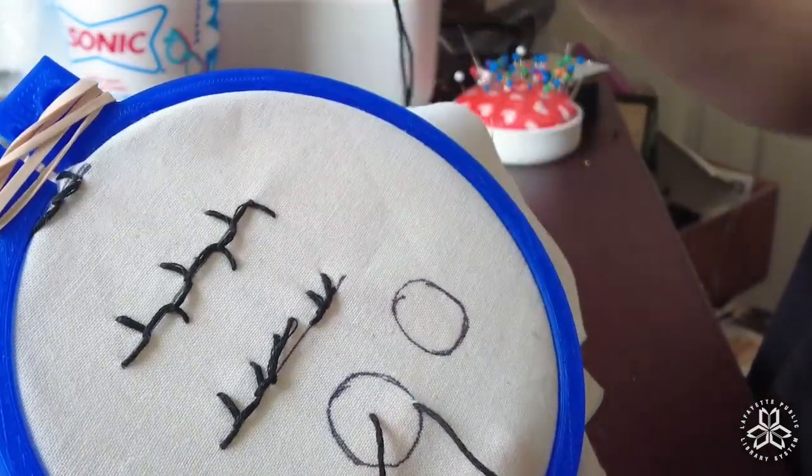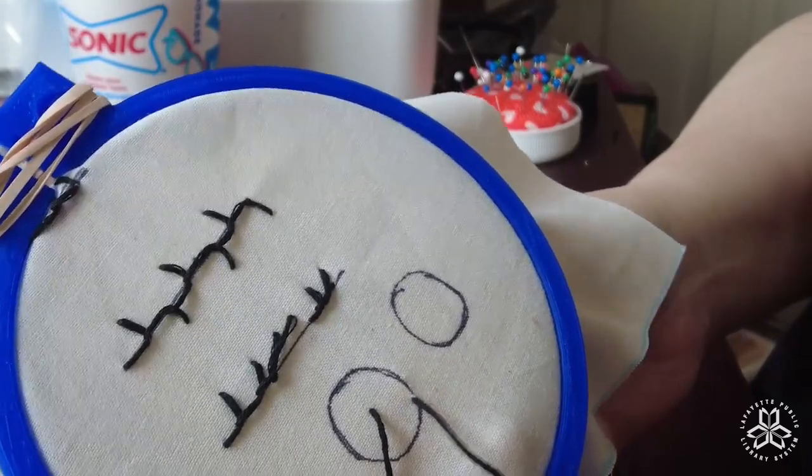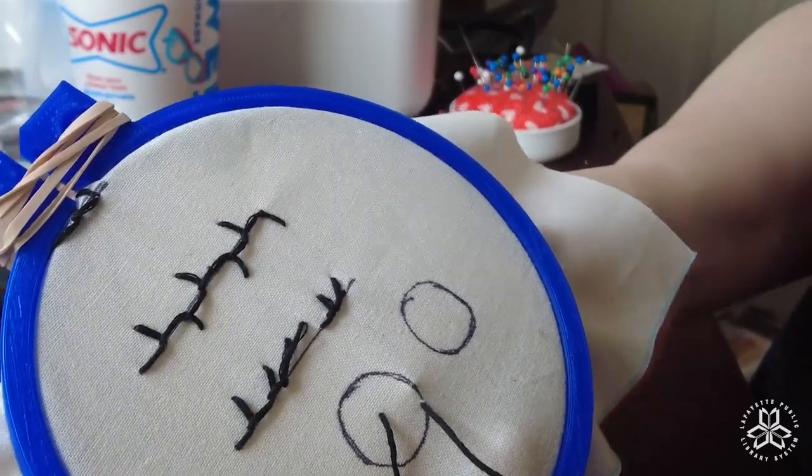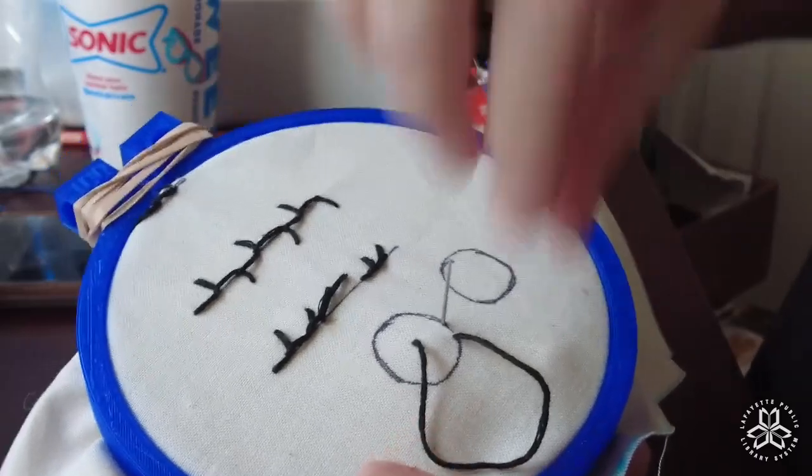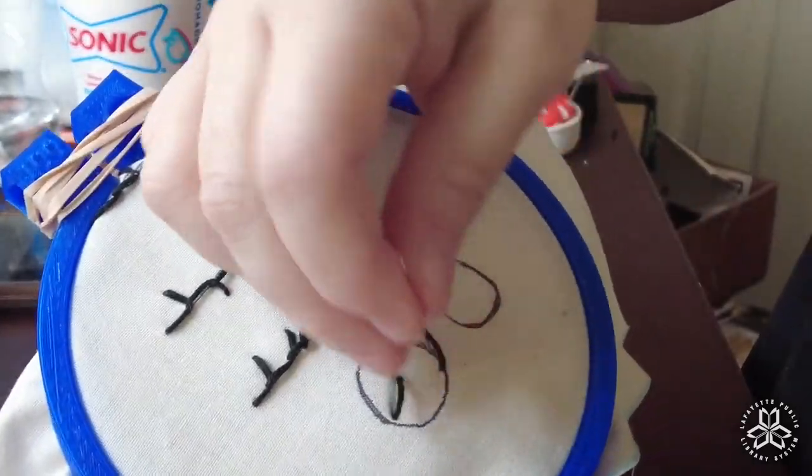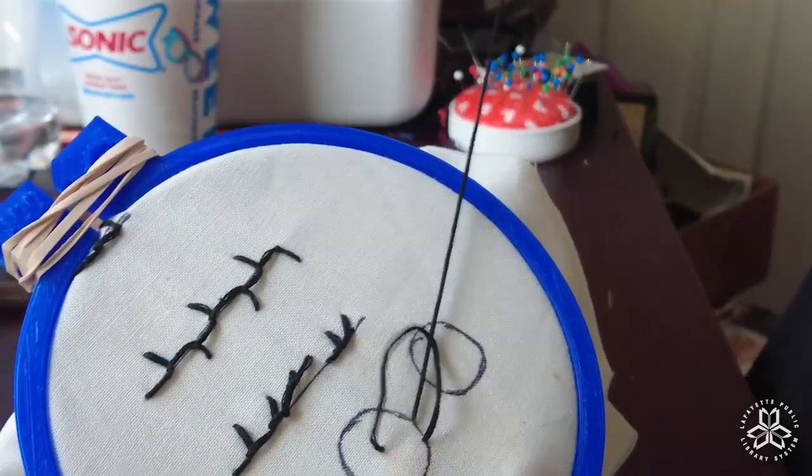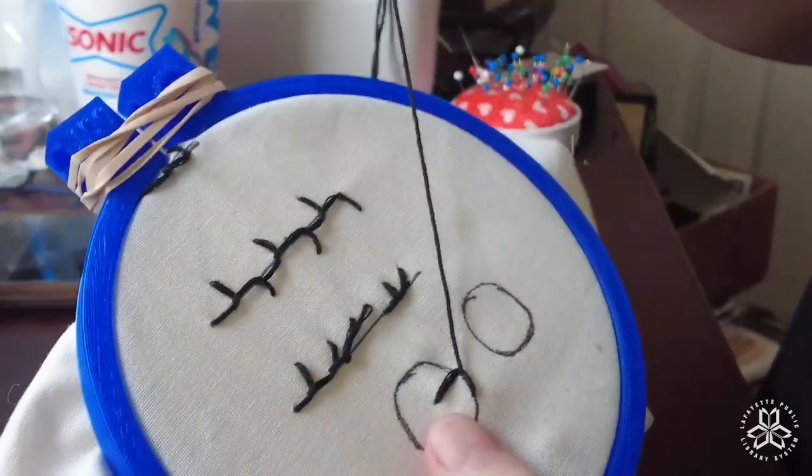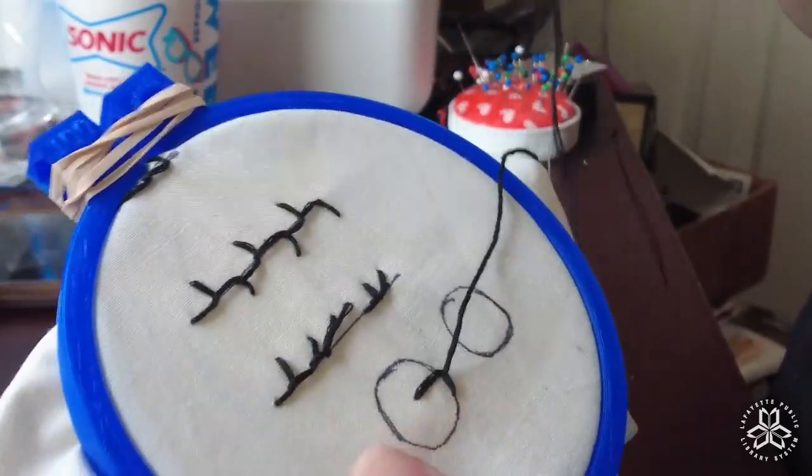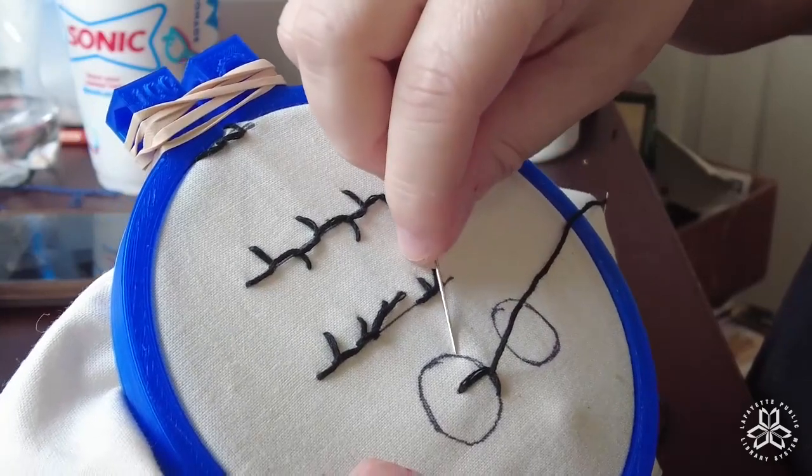And then I'll go over one stitch length. And I'm going to come up from the back along the line, that one stitch length, and then I'm going to go through my loop and pull that taut. And there's the first spoke in my pinwheel.